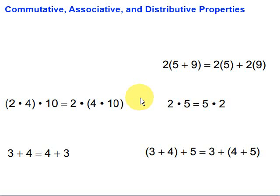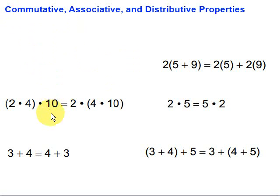In this video, we're going to take a look at the commutative, associative, and distributive properties. I want to start by writing, in general, what's going on with each of those properties, and then we'll see if we can identify the property that's going on in these particular cases.